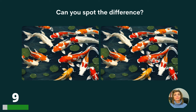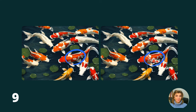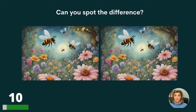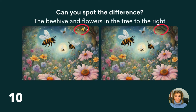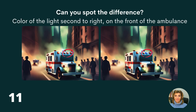The detail of the purple chrysanthemum flower to the right. Question nine, the baby koi between the two giant koi. Question ten — I think they're getting harder. The beehive and flowers in the tree to the right. Question eleven.